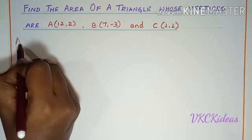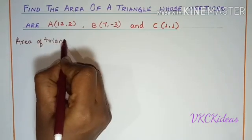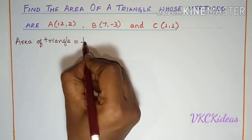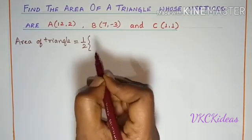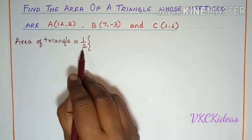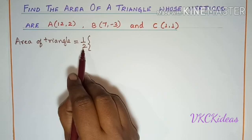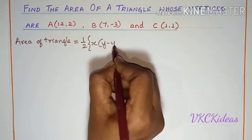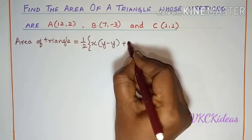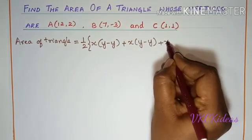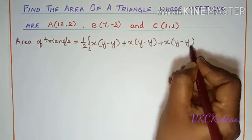Area of triangle is equal to half into—this half you should always remember from the previous formula half into b into h—half into x into (y - y) + x into (y - y) + x into (y - y). Now, we are left with only filling 1, 2, 3 into it.